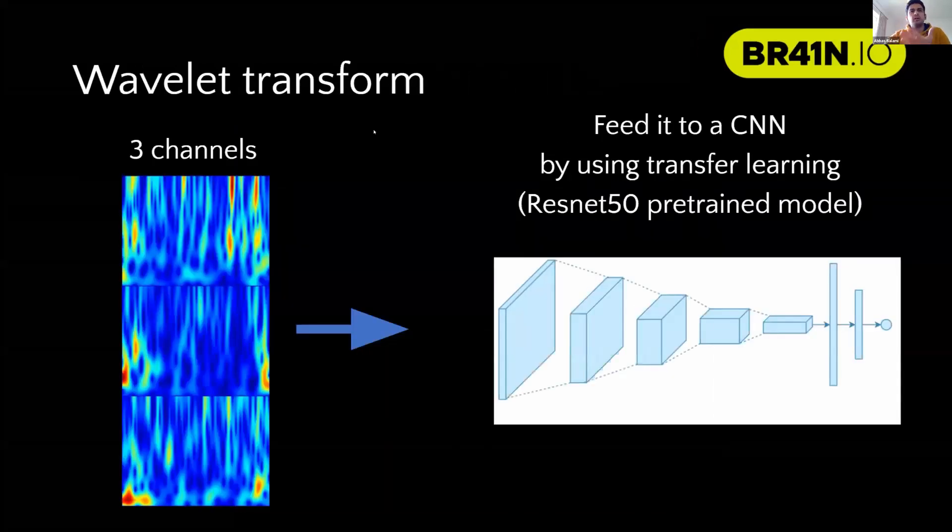For the idea of reducing the number of channels, we selected three channels: C3, C4, and CZ. We extracted the wavelet transform and fed it as an image into a convolutional neural network based on ResNet, which we modified the last layers.